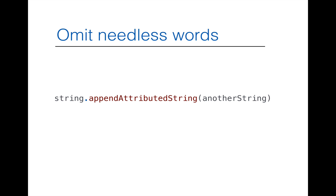Another example is `appendAttributedString`, used to append a string object to another string. With Swift 3.0, that becomes simply `append`. By reading the second statement — `string.append` followed by another string object — we understand enough context. The longer form `appendAttributedString` will be deprecated.